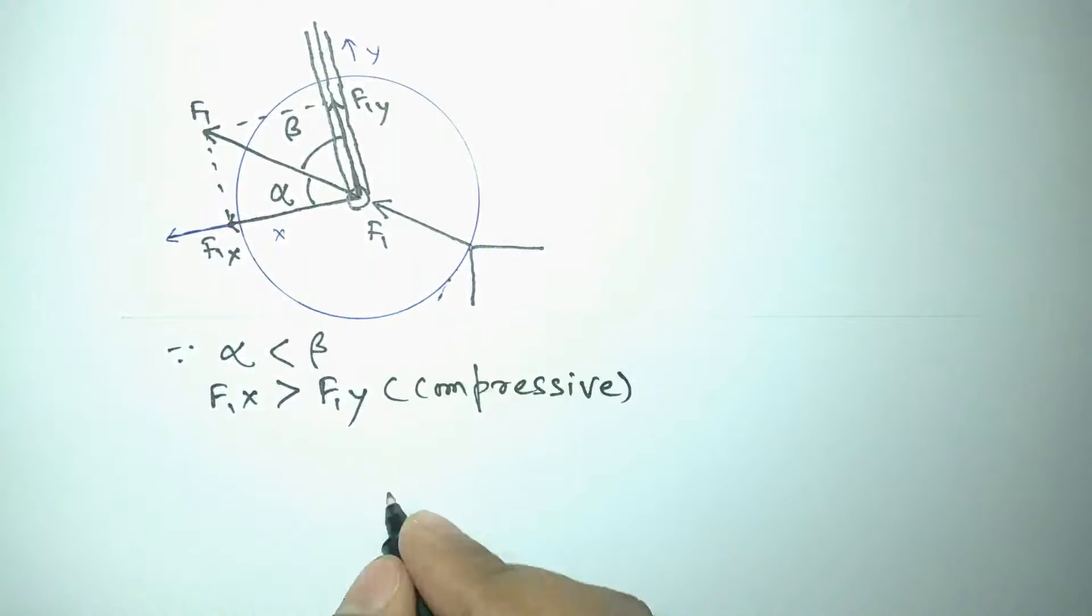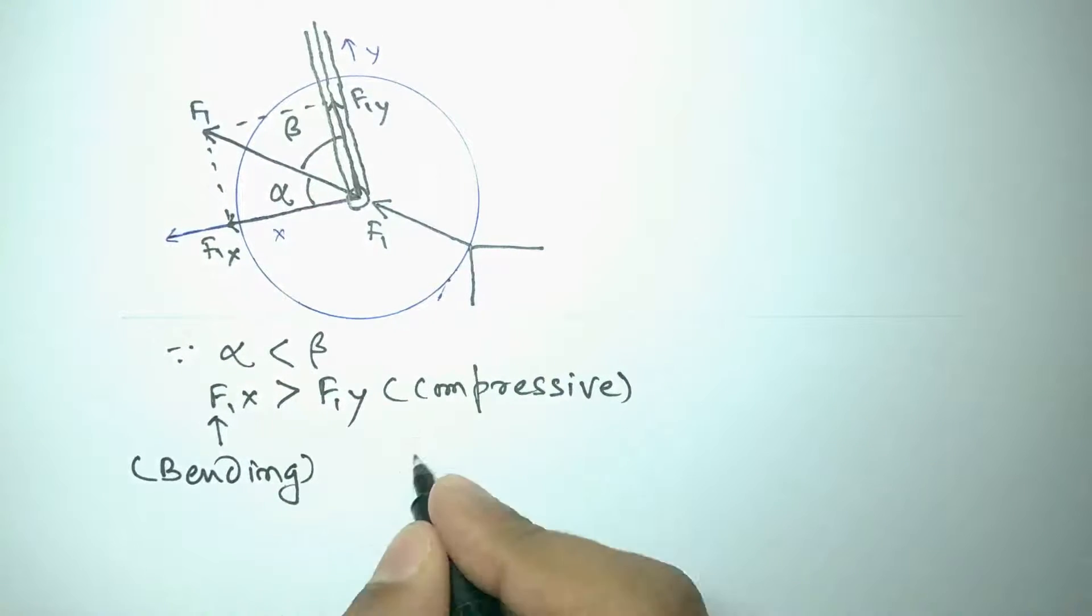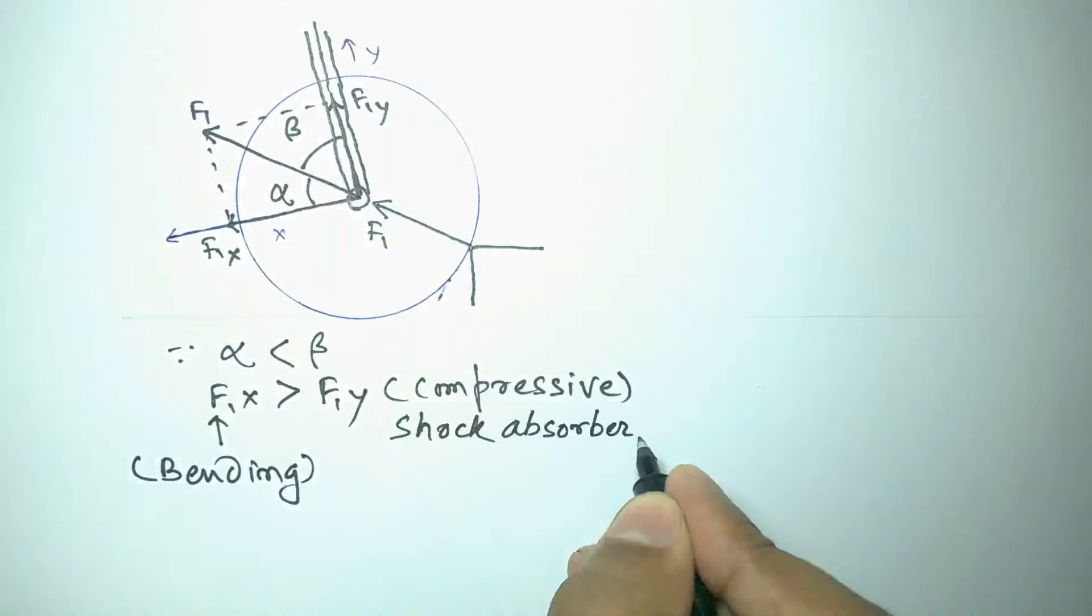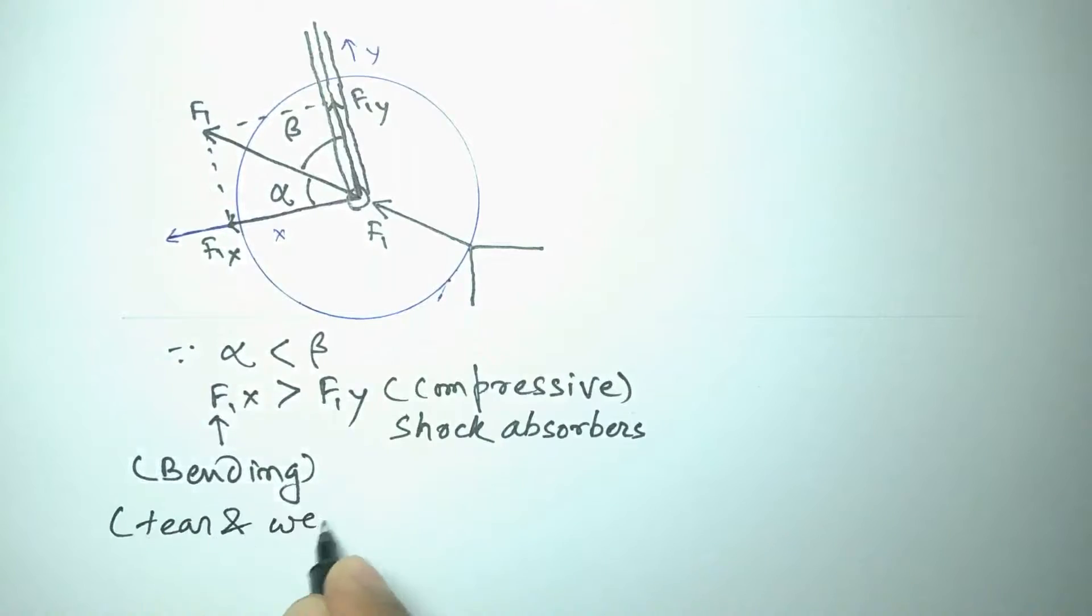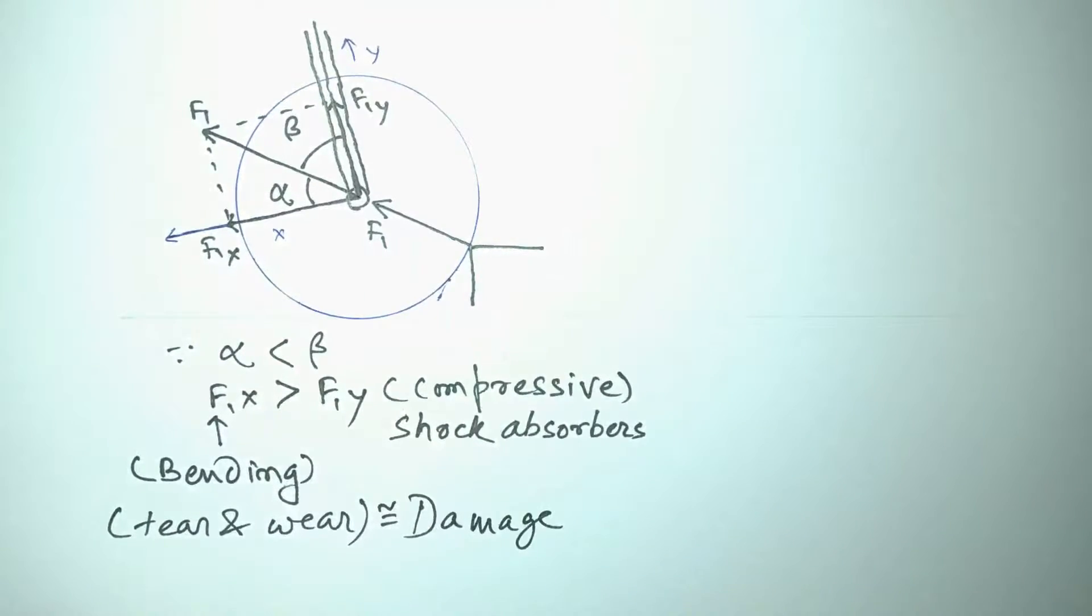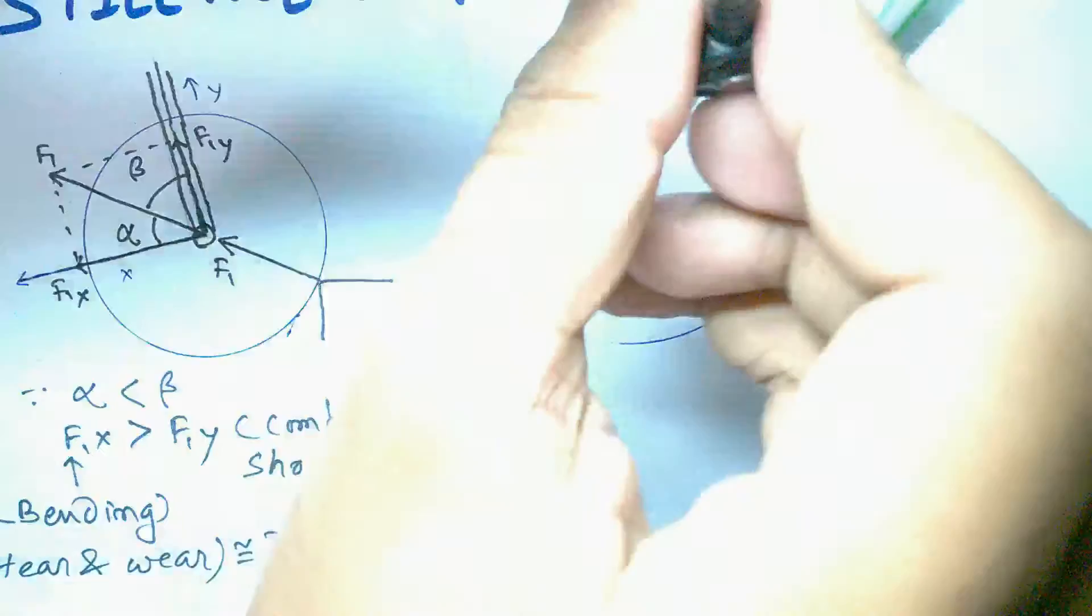The y component will be absorbed by shock absorbers, but the x component of the force will cause bending and sudden reduction in speed, creating shocks, tear and wear, which will eventually lead to damage.